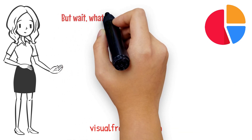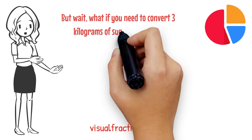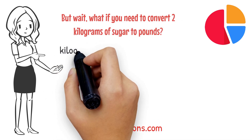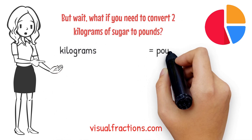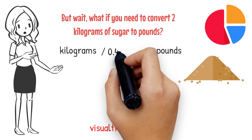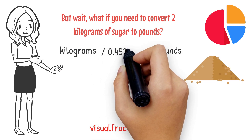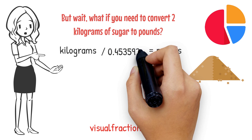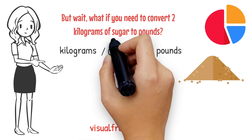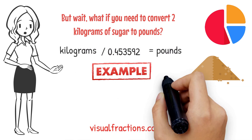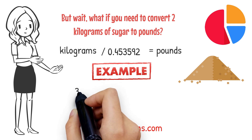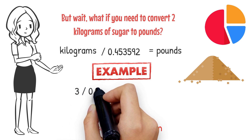But what if you want to convert three kilograms of sugar into pounds? No worries — we've got you covered. To convert kilograms to pounds, divide the number of kilograms by the conversion factor of 0.453592. Let's walk through an example of how to convert three kilograms of sugar to pounds.